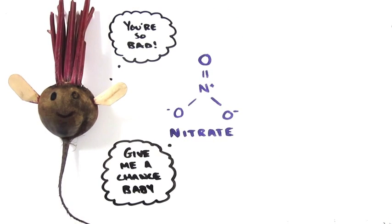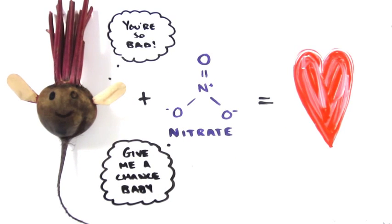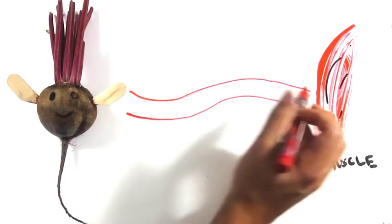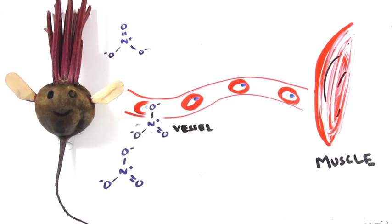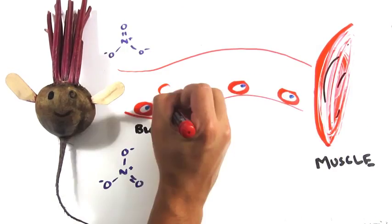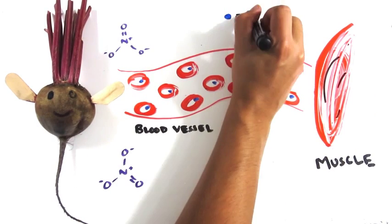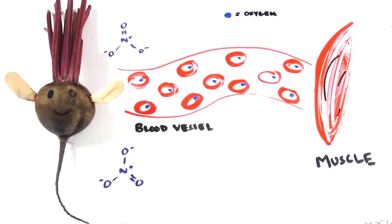Turns out, when nitrates are consumed in the form of vegetables, there are some great health benefits. Specifically for athletes, if taken an hour before racing, it improves endurance by inducing vascular widening. This means the blood vessels increase in size, allowing better blood flow, and as a result, increase oxygen levels travelling to the muscles.